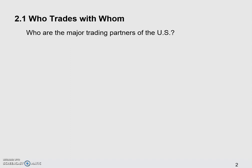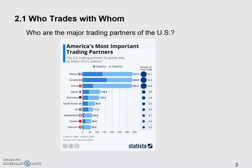Let's check what we have and see if it's consistent with your guesses. The data on this chart goes up to August 2020. You'll find that in that time period, Mexico is our largest — number one — trading partner, followed by Canada at number two and China at number three.